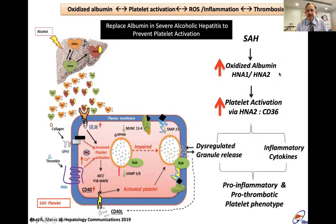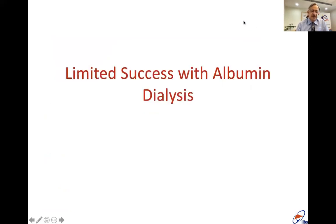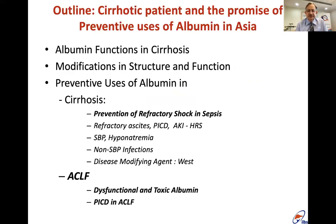Both neutrophils and platelets can become pathological, leading to more inflammation and thrombotic events. However, there is very limited success with albumin dialysis, so we need to understand how much albumin to give, how safe it is, how it is degraded, and how it is modified in patients with ACLF — a huge area of ongoing work.